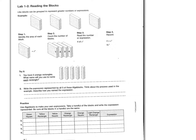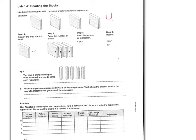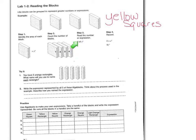Now we're going to learn how to read the blocks. Like blocks can be grouped to represent greater numbers or expressions. That means we could take four of the same thing and call it four of that thing. For example, here we have four yellow squares — each one represents x squared. If we count the number of blocks, we have one, two, three, four. We would read the expression as four x squared. That's what four yellow squares would represent.